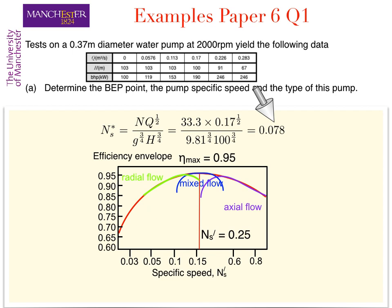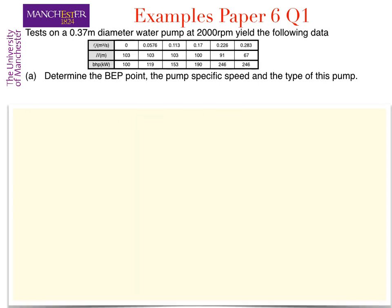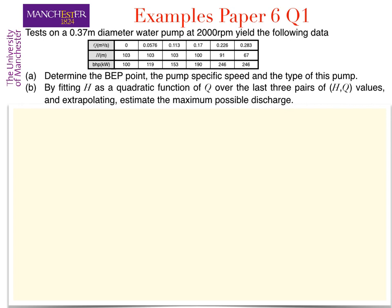We take this value for the specific speed 0.078 from the graph and we see that this occurs when we use a radial flow pump with both a mixed flow and axial flow pump giving us very little efficiency. So we therefore want a radial flow pump.